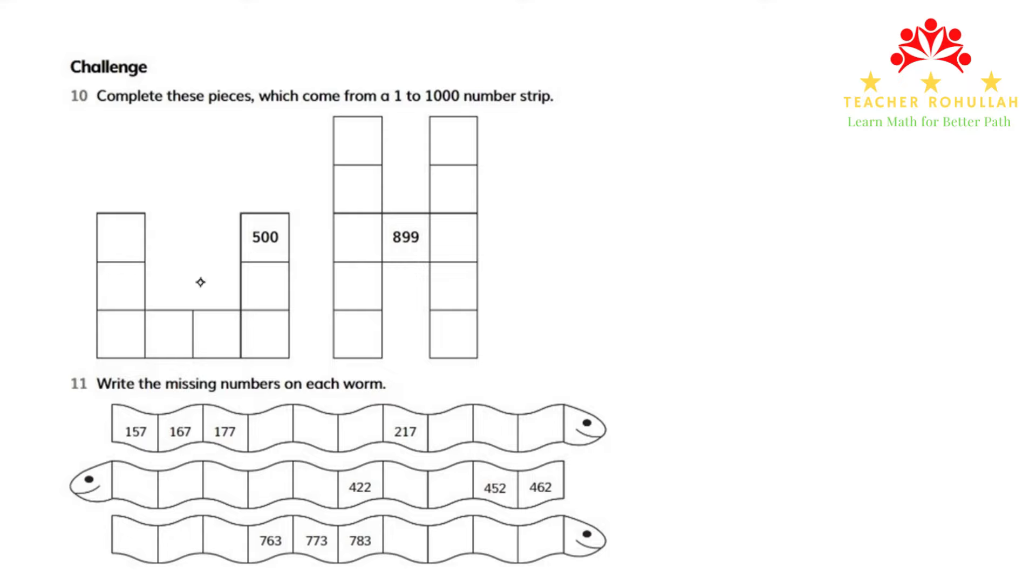So in this piece, in the first piece, we have 500. So under 500, we will have 510, 520, 519, 518, 517, and above 517, we will have 507.